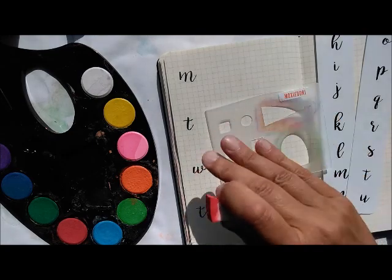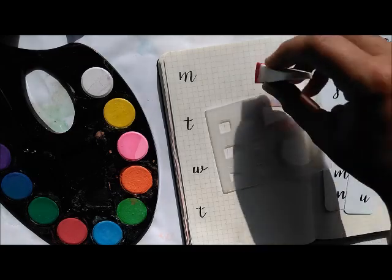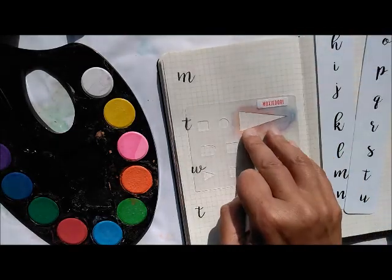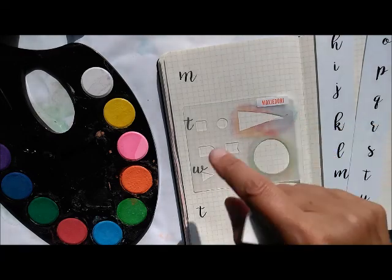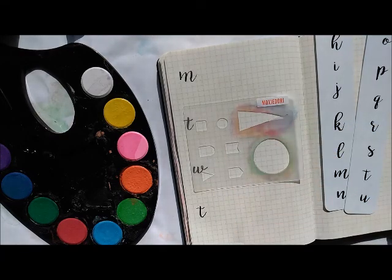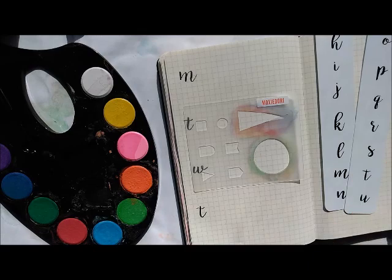And then I'm just going to dab, dab, dab within the stencil. And I like to use multiple colors so that it gives kind of a blended watercolor effect. So here we go.